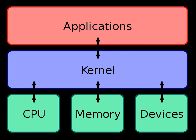Peripherals — input-output (I/O) devices — include such peripherals as keyboards, mice, disk drives, printers, USB devices, network adapters, and display devices. The kernel allocates requests from applications to perform I/O to an appropriate device and provides convenient methods for using the device, typically abstracted to the point where the application does not need to know implementation details of the device.